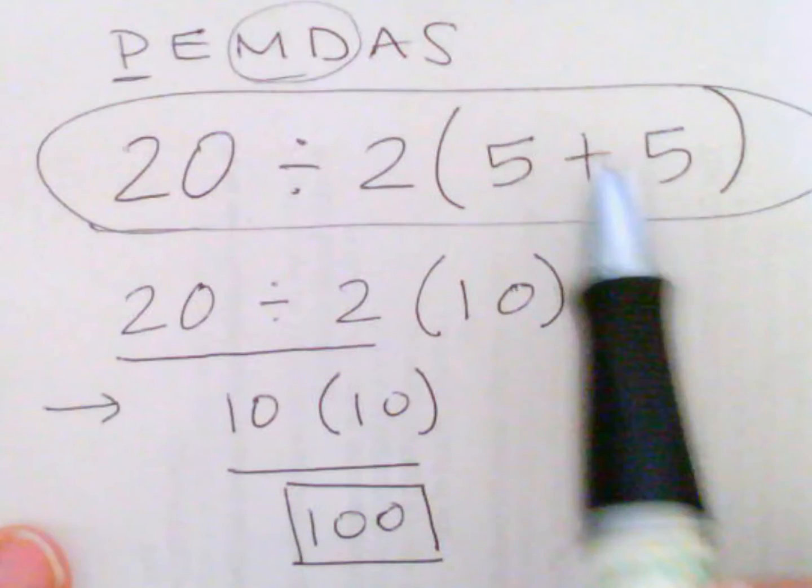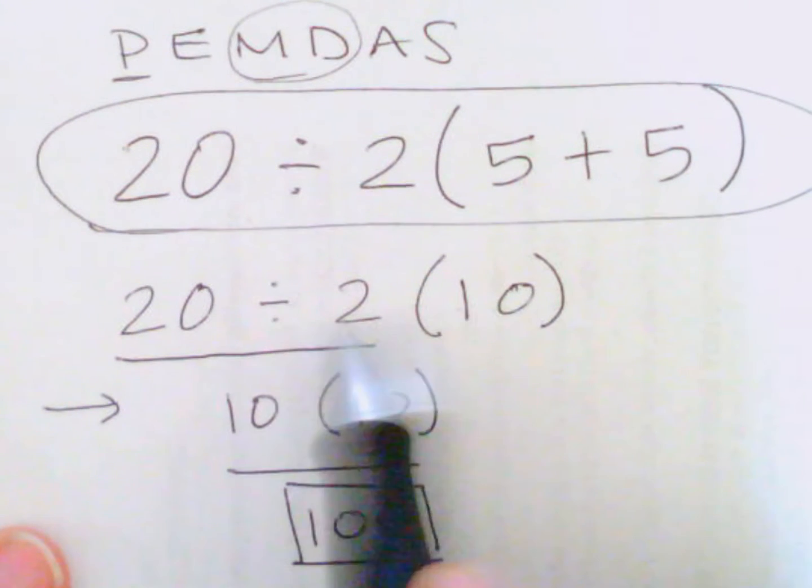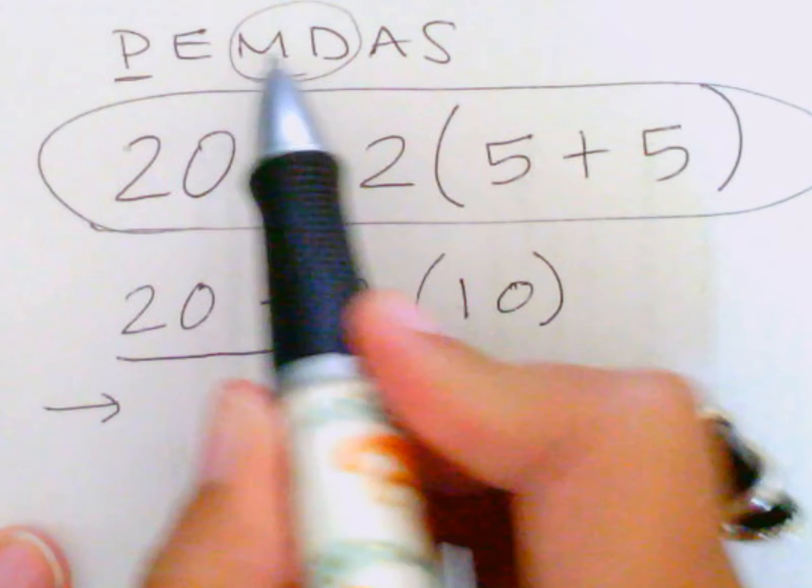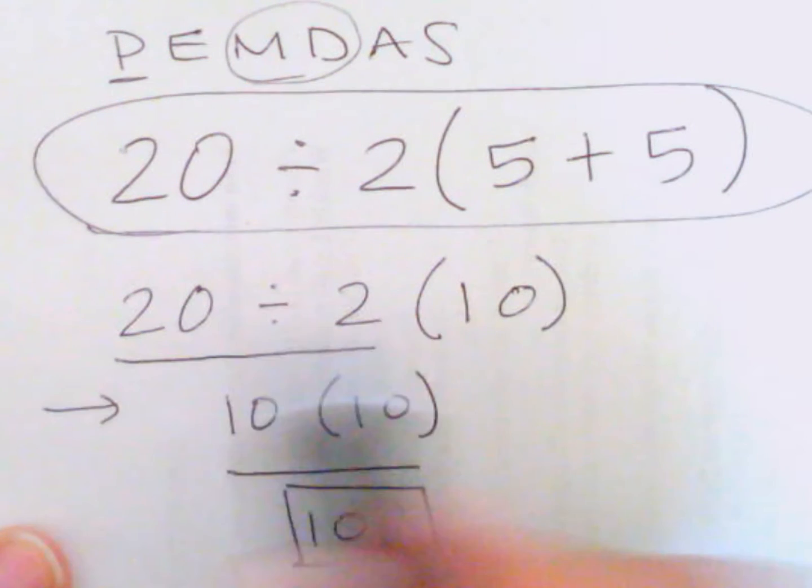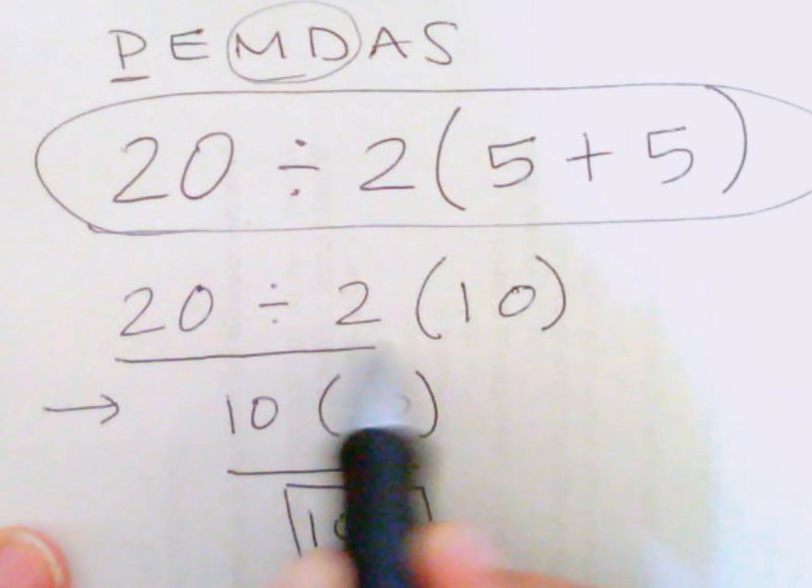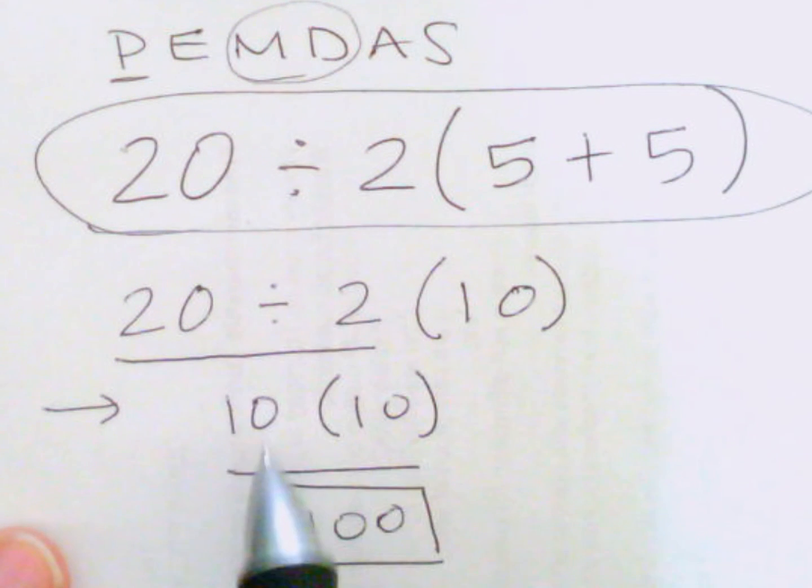So please don't be confused in thinking that you do multiplication here first. Just because M is first, multiplication and division are done left to right. So if there's division first on the left, this is done first. 20 divided by 2 is 10, then 10 is multiplied by 10, getting an answer of 100.